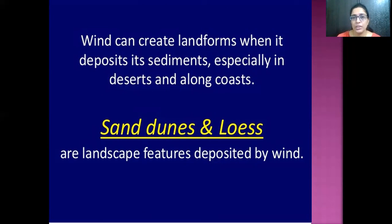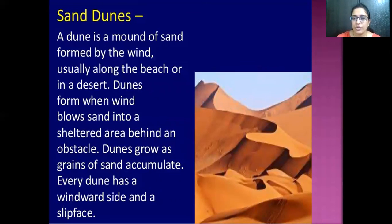Wind can create landforms when it deposits its sediments. Sand dunes and loess are two features formed by the deposition of wind. A sand dune is a mound of sand formed by the wind. Dunes form when wind blows sand into a sheltered area behind an obstacle, and they grow as grains of sand accumulate. Every dune has a windward side and a slip face.